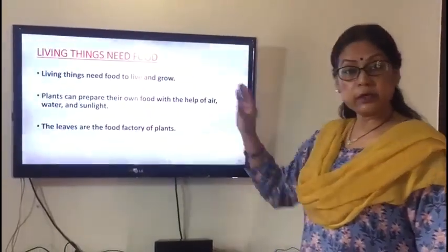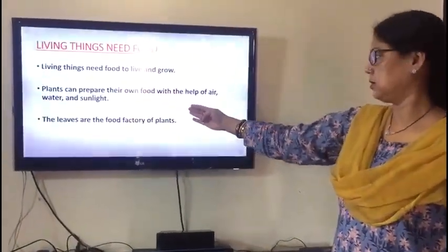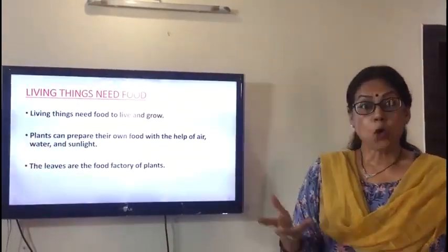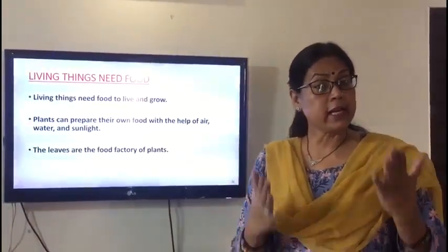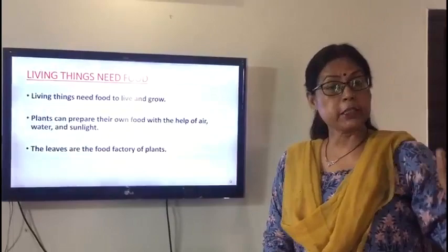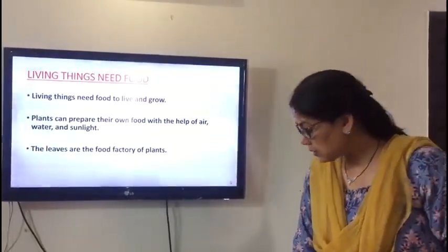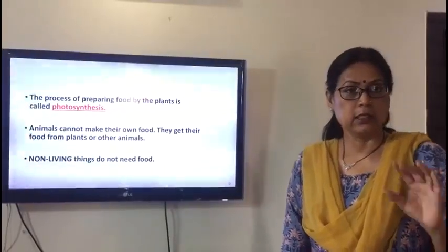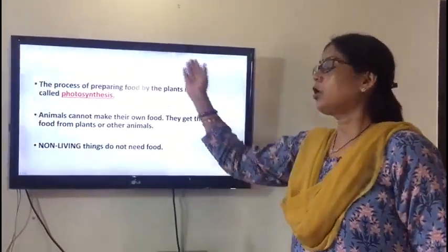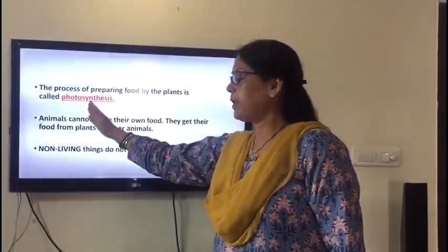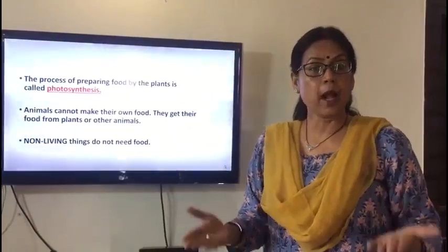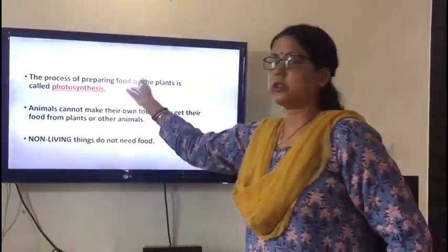Plants can prepare their own food with the help of air, water, and sunlight. The green leaves of the plants are the food factories — the kitchen of the plant. The process by which a plant prepares food with the help of air, sunlight, and water is called photosynthesis. Photo means light, synthesis means to make — so in the presence of light, when the plant prepares its own food, it is called photosynthesis.